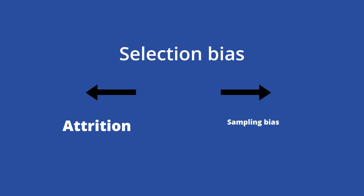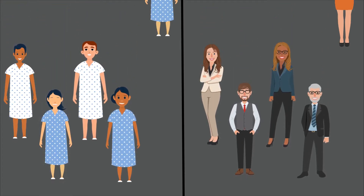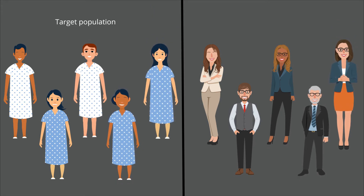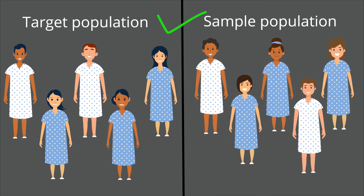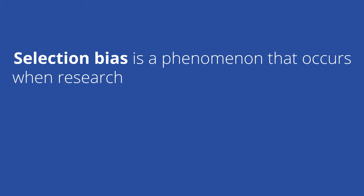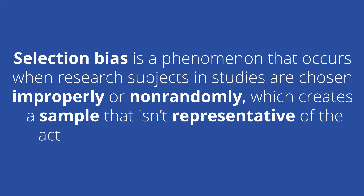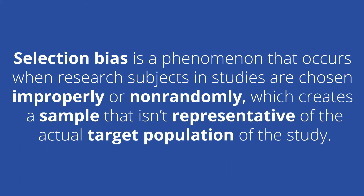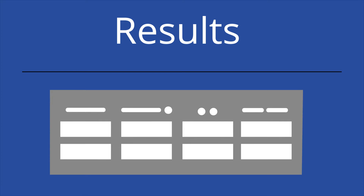Selection bias consists of different subtypes such as sampling bias and attrition, to name a few. Most of these biases can be avoided if preventative measures are taken before the results of a study. If selection bias is avoided, it can result in studies having more accurate findings that are consistent and representative of the target population. Selection bias is a phenomenon that occurs when research subjects are chosen improperly or non-randomly, creating a sample that isn't representative of the actual target population. These biases were identified after reviewing findings of studies that showed inaccuracy and non-representativeness of the population the study was based on.